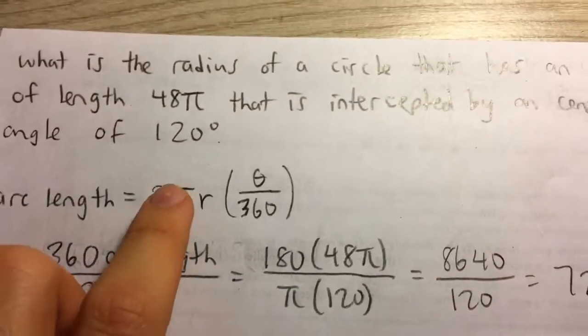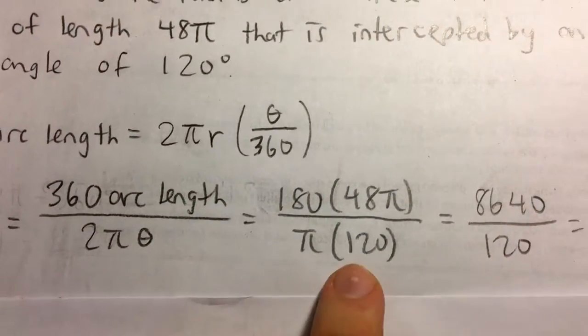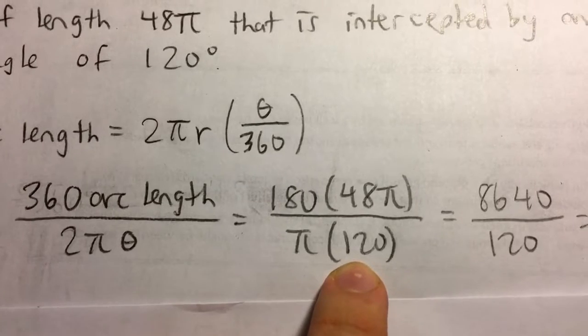Then I plugged in the arc length, which we were given is 48π, and also the θ value, the angle, which is 120 degrees.